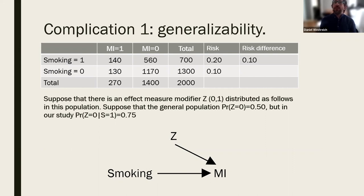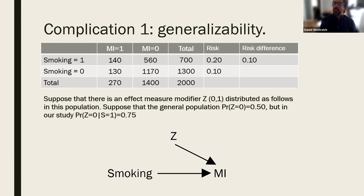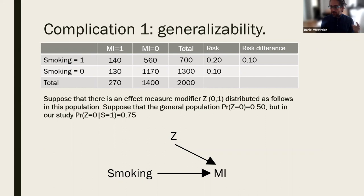This is a tricky talk because epidemiologic methods are at least as much a verbal or semantic challenge as they are a quantitative challenge. So much of first-semester epidemiology is not about getting the calculations right — because the calculations are so easy — it's about expressing what those calculations mean unambiguously and accurately.